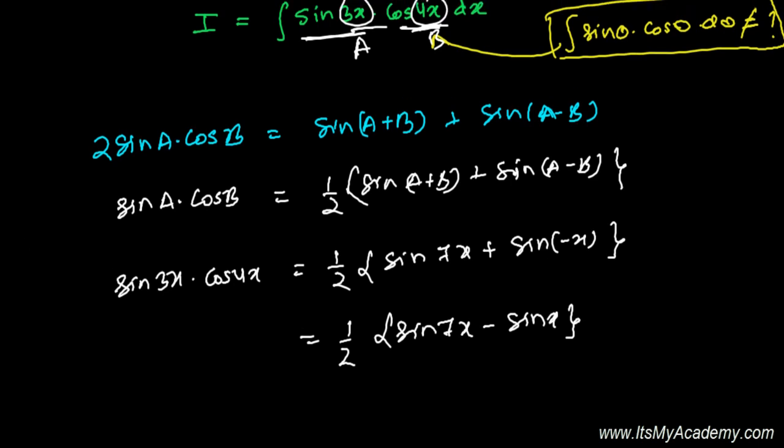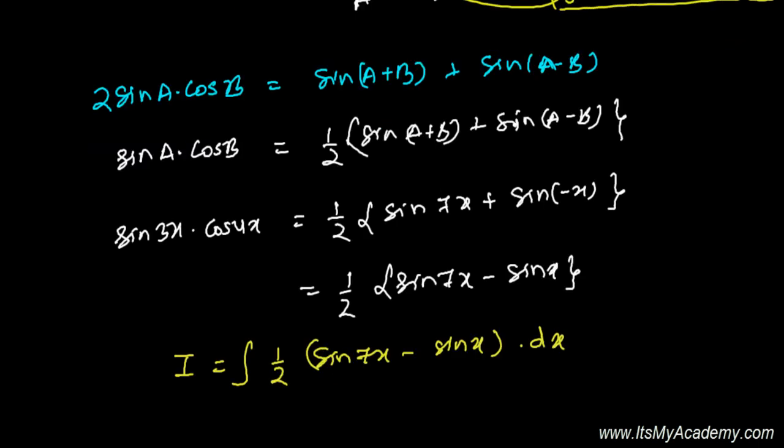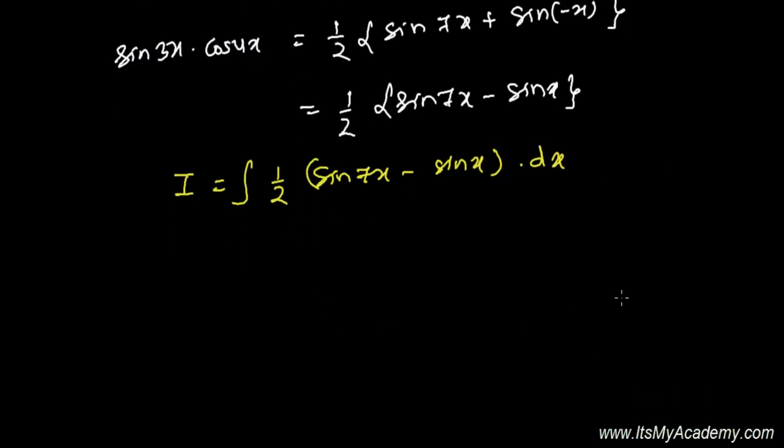And now this I'm going to use here. So my integral will be now, in the place of sine 3x cos 4x dx, I'm going to write one by two sine 7x minus sine x times dx.